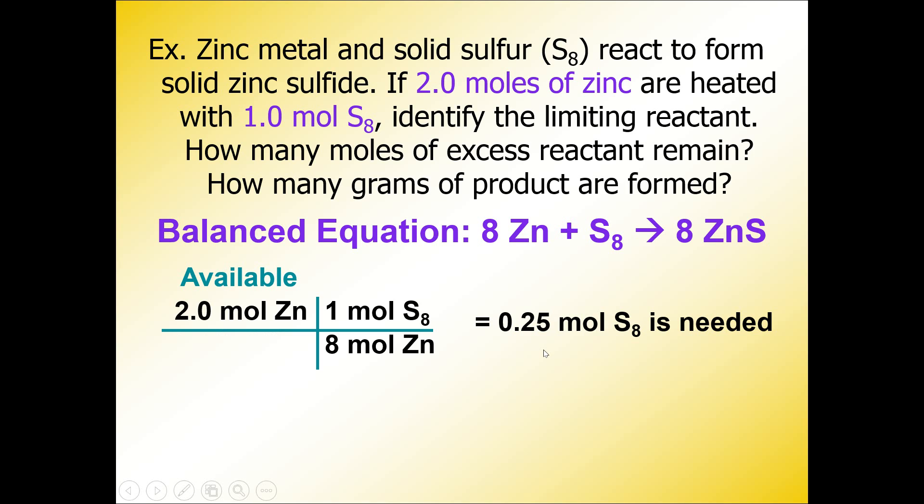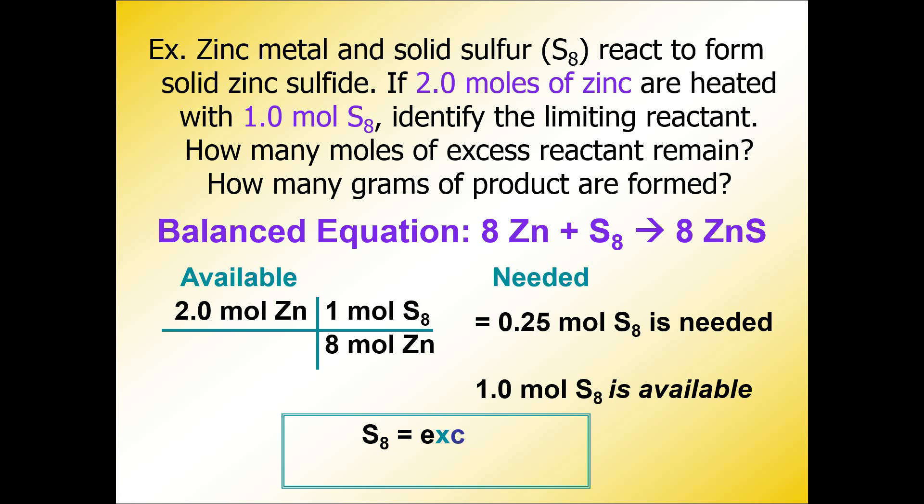Now we can compare the amount that's needed to the amount that's actually available. If you read back in the problem, there's 1.0 moles of sulfur actually available, but we need 0.25 moles. You ask yourself: do we have enough? Yes we do. And because we have enough sulfur available, that means sulfur S8 is in excess and zinc is the limiting reactant.